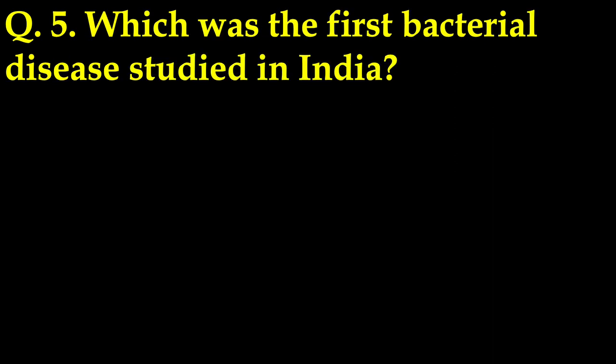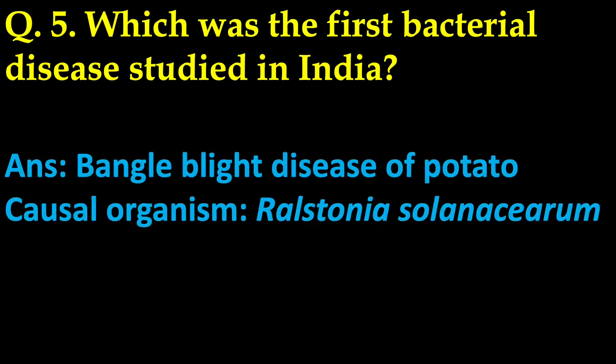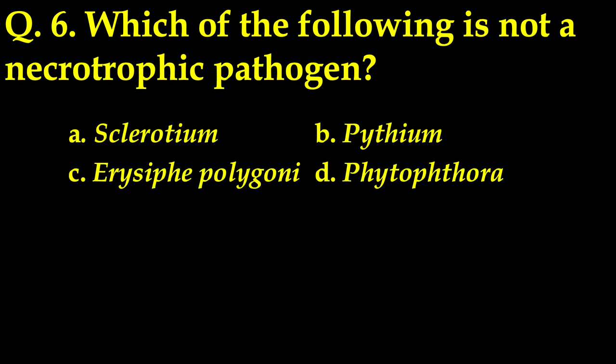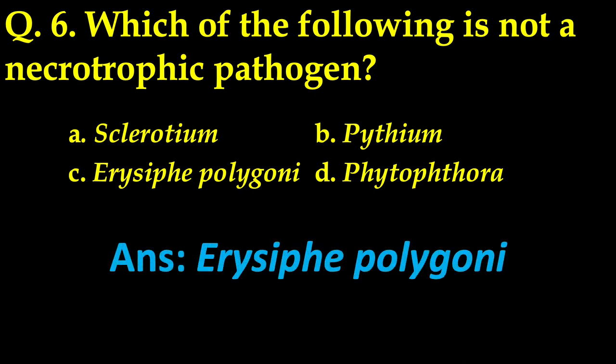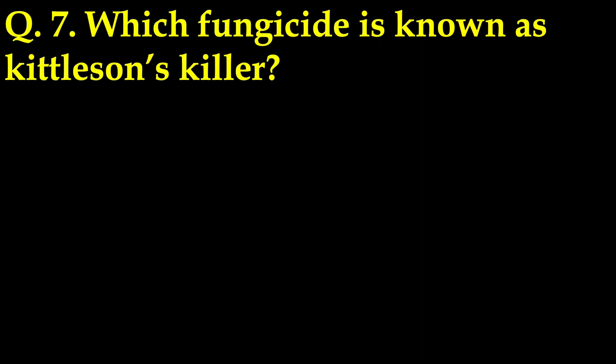Another question: which was the first bacterial disease studied in India? Interestingly, the answer is Bengal blight disease of potato caused by Ralstonia solanacearum. Next, which of the following is not a necrotroph — there were four options and the correct answer is Erysiphe polygoni.